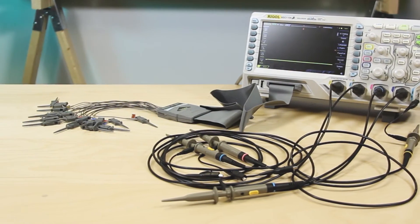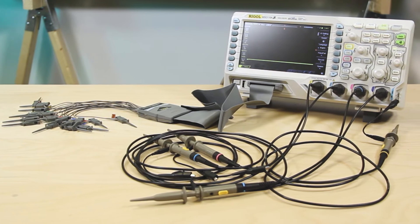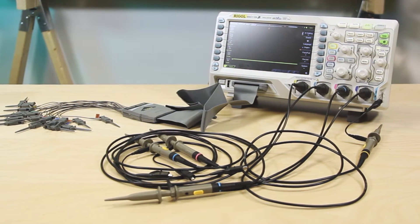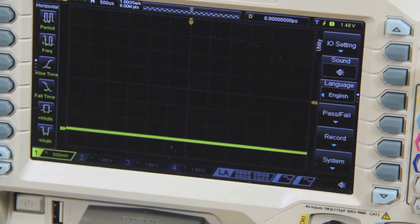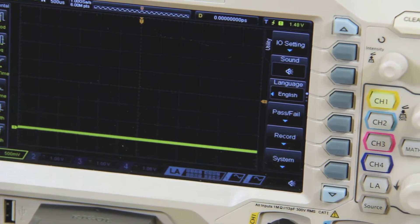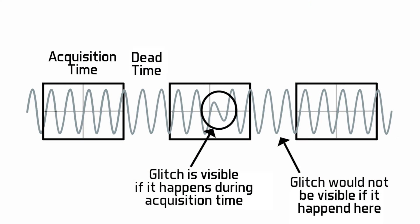Wait, what's a waveform update rate, and why would anyone care? Well, the sample rate, which on this scope is 1 gigasample per second, says how frequently the scope samples the input signal within one cycle. But the waveform capture rate refers to how quickly the scope acquires waveforms while accounting for the scope's blind time or dead time.